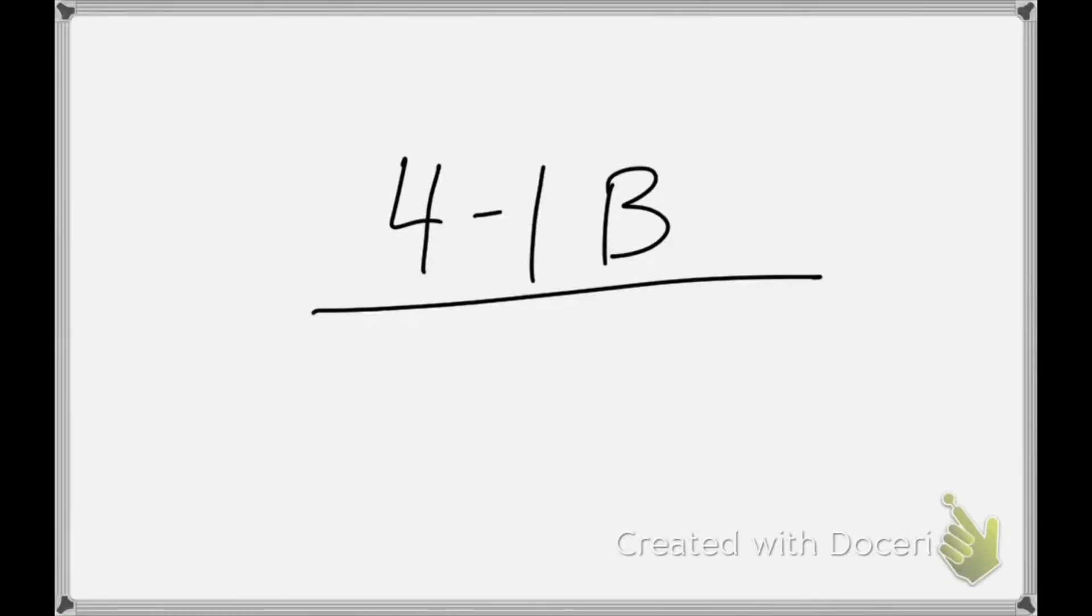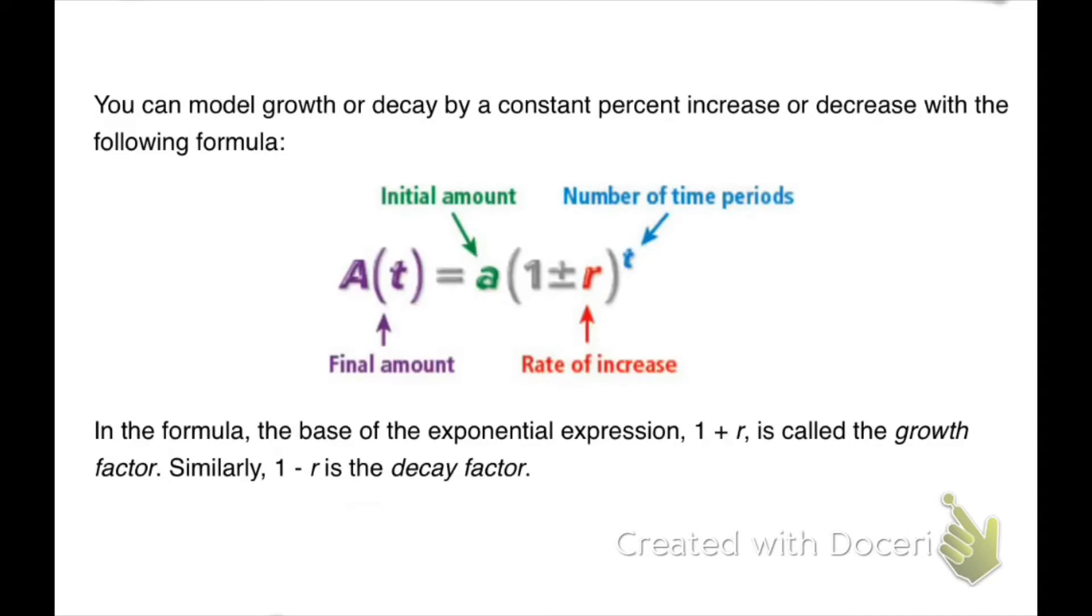Alright, so today we're looking at four dash one B and we're still looking at our exponential functions and growth and decay. But today we're going to be looking at word problems, how to use our exponential growth and decay to solve for different word problems. We do have an equation here and this is our model for growth and decay.